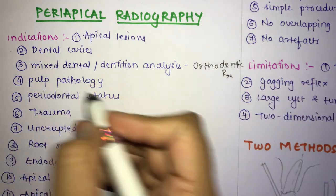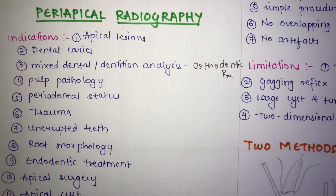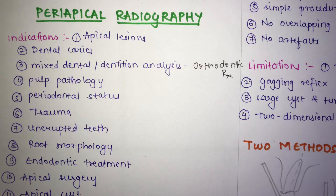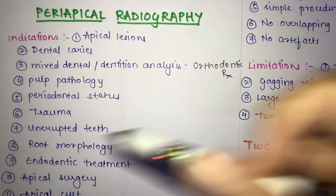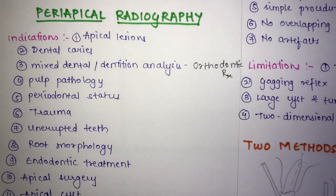Next is pulp pathology — to evaluate pulpal calcification and pulp stones; if any pulp stones or calcification are present, periapical radiography is indicated. Next is periodontal status — it is useful in assessing periodontal status, for example evaluating how severe bone loss is.